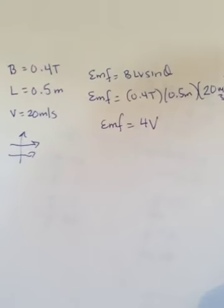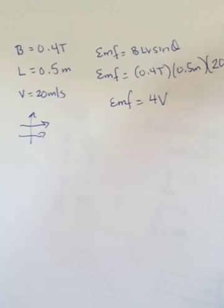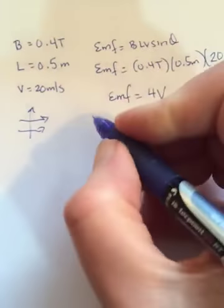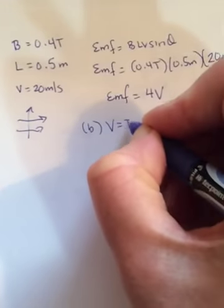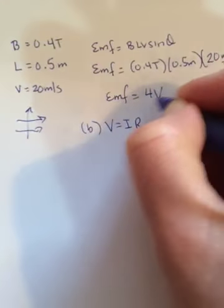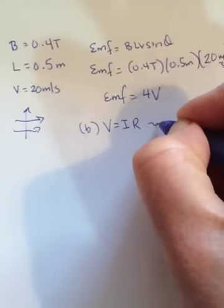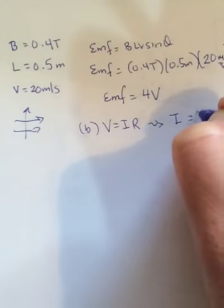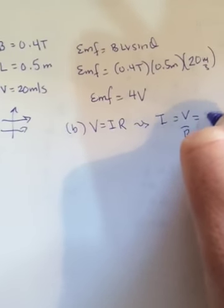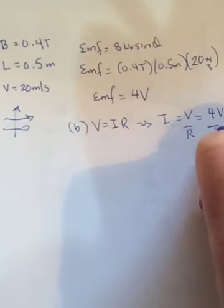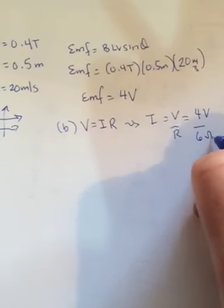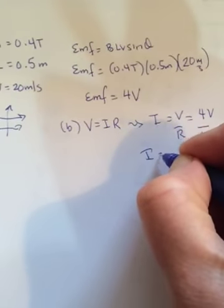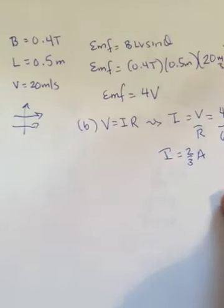The wire is part of a circuit of total resistance 6 ohms. What is the current? So in part B I have to do V equals IR recognizing that this EMF is just a V and so I is equal to V over R. So 4 volts divided by 6 ohms. So I is equal to 2/3 of an amp or 0.6 repeating.